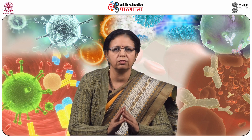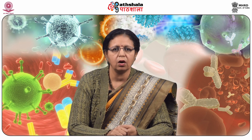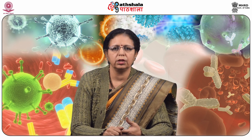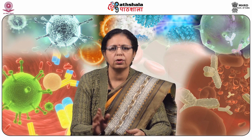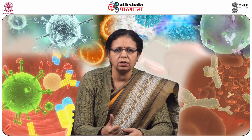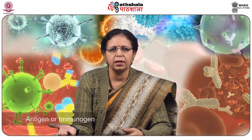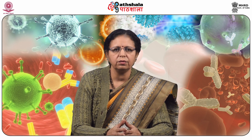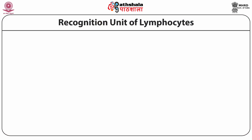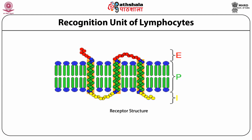Before understanding the structure of BCR and TCR and other components of the recognition unit of lymphocytes, we must know what a receptor is and its structure. A receptor is a membrane molecule for binding with any chemical — antigen, hormones, or neurotransmitters. It has three components: the extracellular domain for recognition and binding with the ligand or antigen; the transmembrane component to carry information through the plasma membrane; and the intracellular or cytoplasmic tail for signal transduction.